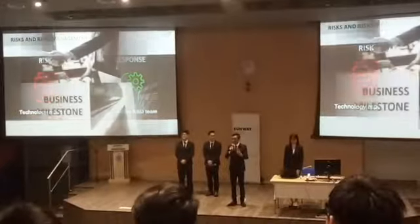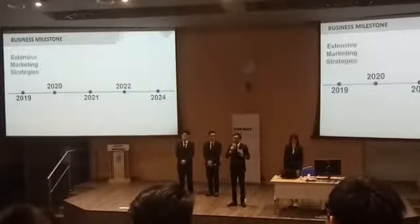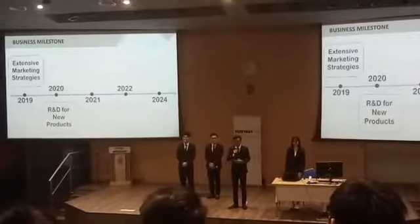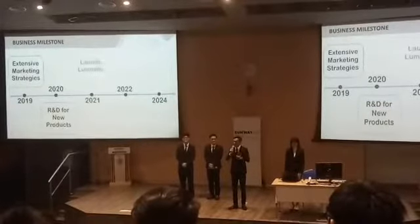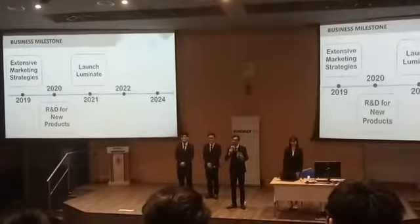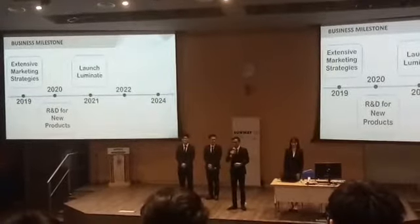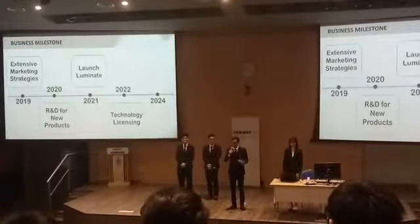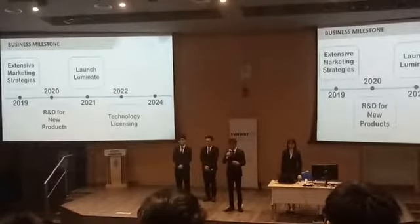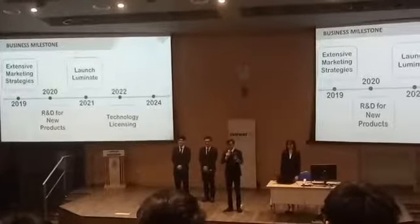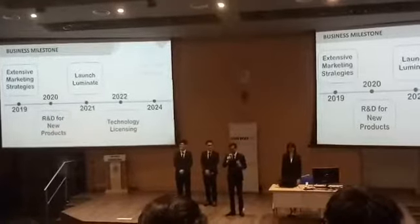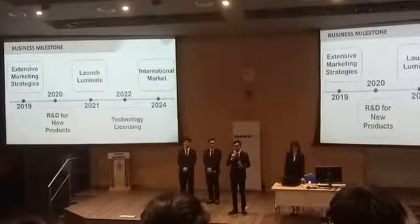As for our business milestones: in the first year, extensive marketing strategies will be done to promote Sanity. In the second year, we will invest in R&D to prepare for our new product launch. In the third year, we plan to introduce our new product, Luminate, a system that incorporates our technology. During the fourth year, we will be licensing to different companies such as Dyson and Lenovo, and collaborating with lighting companies. With all those expansions in production, personnel, and brand building, we believe we are ready to move into the international market in 2024.